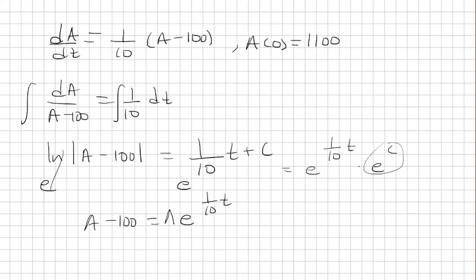And this is just a constant. So I'm just going to call it, that's not a good letter. Let's use c. Or k, rather. Let's use a different letter. Let's call it k. And so we can add 100 to both sides.